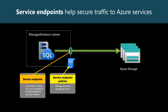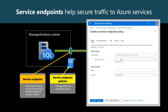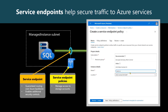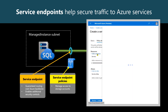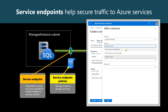Let's create a policy now. In Basics, we choose the subscription and the resource group where to place this policy. We give it an informative name, and in Location, we select the region where our Azure SQL Managed Instance is. In Policy definitions, under Resources, we can name individual accounts, resource groups, or all accounts in a subscription. In this demo, we'll scope it to a single account.